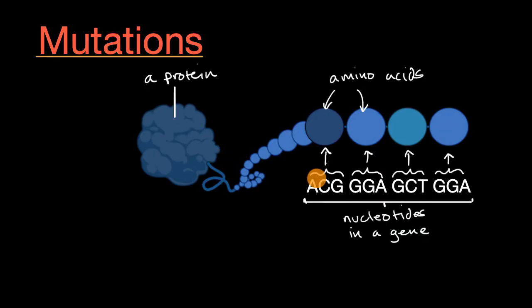what we see right over here is what's often known as the central dogma of biology. It explains how we go from information in our DNA, which is really sequences of nucleotides. Genes are segments of our DNA that code for specific things.